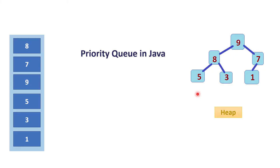In the previous video I explained what a priority queue is. A priority queue is a kind of queue where elements are ordered according to their priority, not like a normal queue where the order is maintained as first in first out. Here the order is maintained based on the priority of the elements. Priority queue internally uses the heap data structure to implement it.